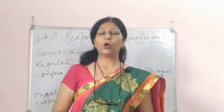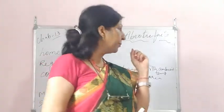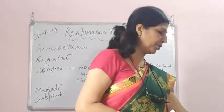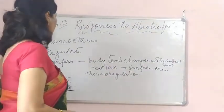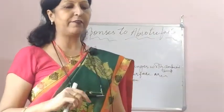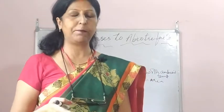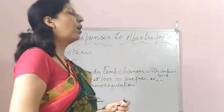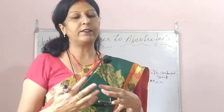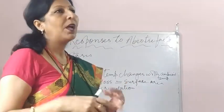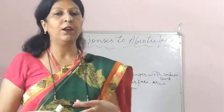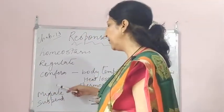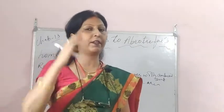Hello children, welcome back. Today we continue with Chapter 13, Ecology — the topic is Organisms and Population. This is the second lecture; we have already talked about abiotic factors and their role in the growth of organisms. Now we are going to talk about responses to abiotic factors — how organisms have started responding. These responses are divided into four: Regulate, Conform, Migrate, and Suspend. I've also written Homeostasis here.